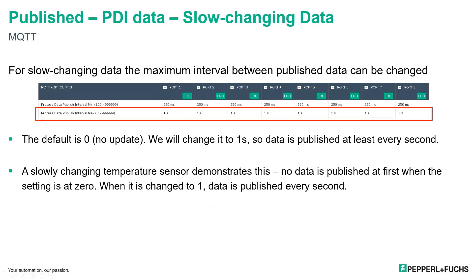Next, we have slow changing data. For slow changing data, the maximum interval between published data can be changed. The default is 0, or no update. We will change it to 1 second so that the data is published every second. A slowly changing temperature sensor demonstrates this — no data is published at first when the setting is at 0, and then when it is changed to 1, data is being published at every second.